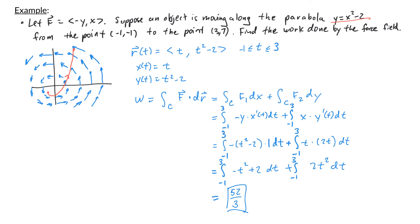In both examples we used the same force field with the same initial and terminal points, but because we took different paths, the work done was different: -4 for the line segment and 52/3 for the parabola. This shows that the object in the second example moved more in line with the force field. In the next video we'll look at force fields where the path taken does not matter.